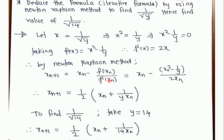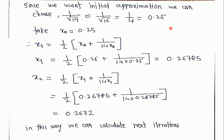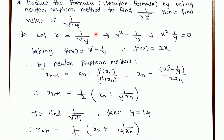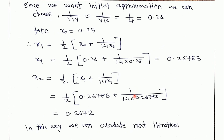Since y is any fixed value, we find 1/√14 by taking y = 14 and substituting into the iterative formula. For the initial guess, we note that 1/√14 ≈ 1/√16, so our initial guess is x₀ = 0.25. Substituting x₀ = 0.25 into x₁ = (1/2)(xₙ + 1/(14·xₙ)), we get the first iteration value. Similarly, we can calculate the second and subsequent iterations.